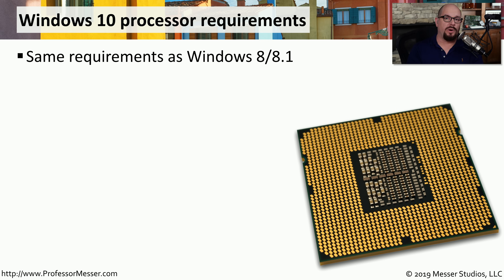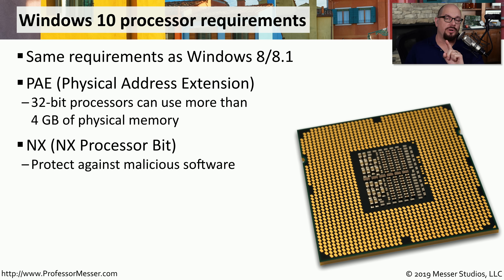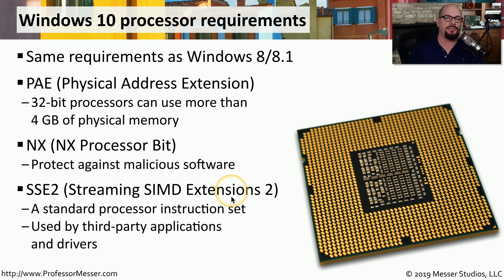If you're already familiar with the hardware requirements for Windows 8 or Windows 8.1, you'll find the hardware requirements for Windows 10 are exactly the same. The processor needs to support PAE (Physical Address Extension), which allows 32-bit operating systems to access more than 4 gigabytes of physical memory. The processor also has to support the NX processor bit, which helps protect against malicious software, and SSE2 (Streaming SIMD Extensions 2), which application developers use to write applications for the operating system.